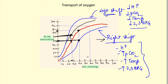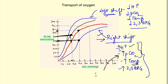Increased hydrogen ions, CO2, and temperature all occur near metabolizing tissues — these are byproducts of metabolism. Since metabolizing tissues need more oxygen, a right shift is induced there, decreasing hemoglobin's affinity and causing oxygen release to the tissues. The specific effect of CO2 partial pressure on oxygen transport affinity is known as the Bohr effect.